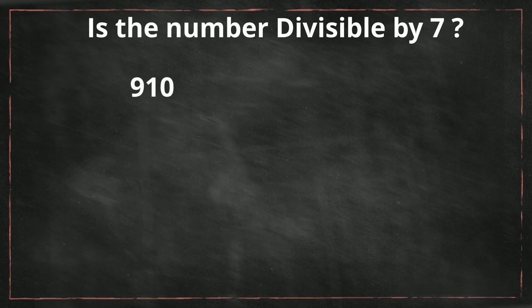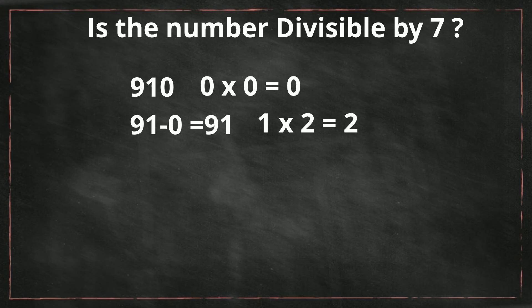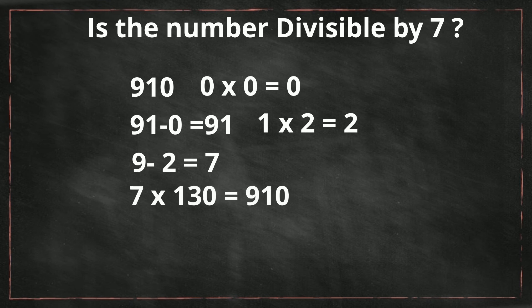How about 910? 0 times 2 is 0, so 91 minus 0 is 91. I don't know about 91, so I'm going to multiply 1 times 2, which gives me 2. The remaining number is 9. 9 minus 2 is 7. Yes, 7 goes into 7, so 910 is divisible by 7 also.